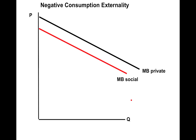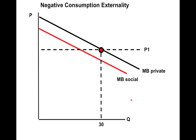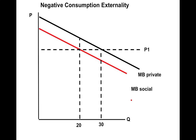What happens when we face a particular price? The domestic consumer is going to consume where price P1 equals the marginal benefit of consumption — in this case, say, 30 units. From a society standpoint, where the social marginal benefit equals the price results in fewer units consumed, say 20 units. So with the negative consumption externality, too much is consumed. Let's look at the total market inefficiency associated with this externality, with no government intervention.